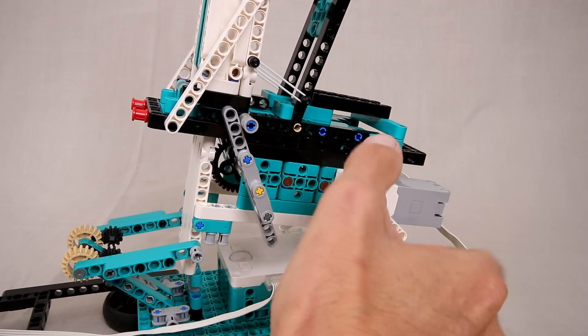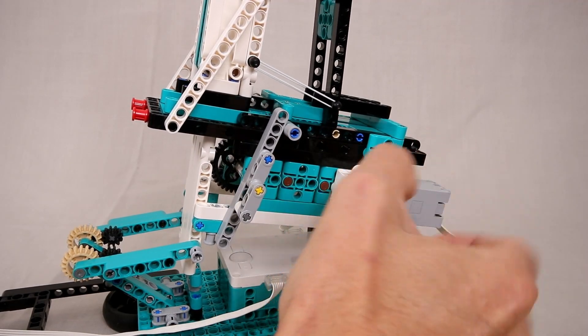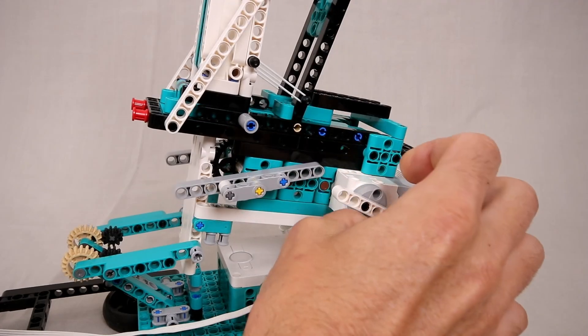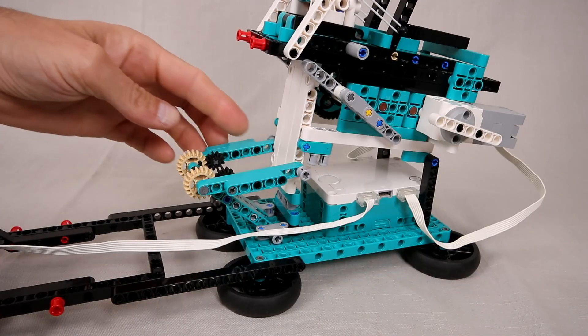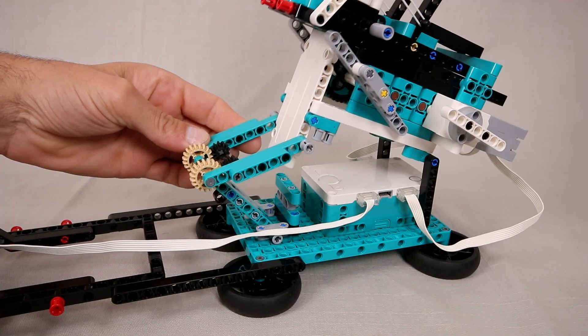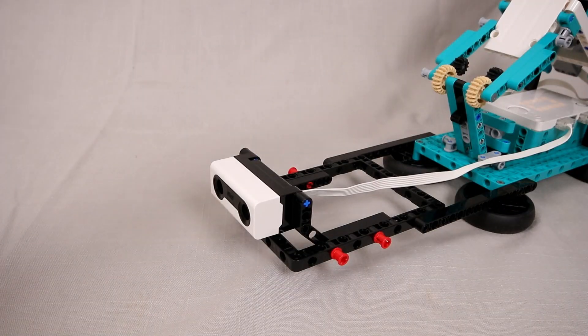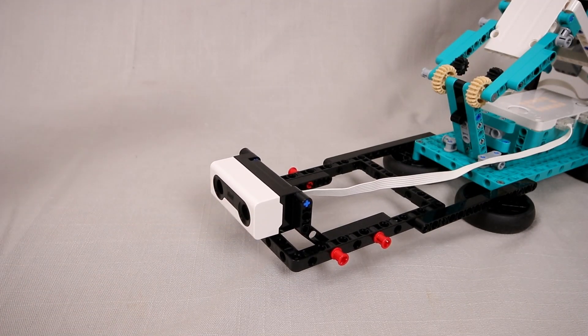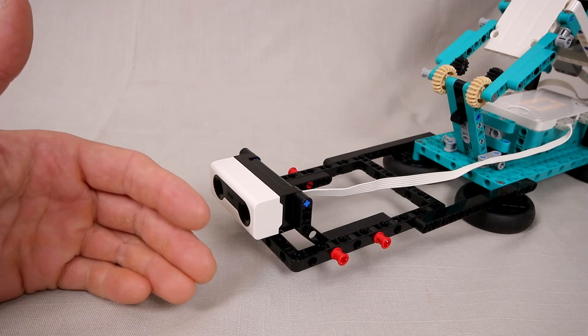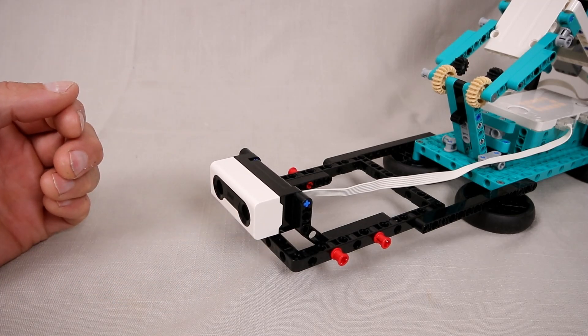I also added a scissor mechanism at the front so I can adjust the launch angle and I also added the proximity sensor in the front of the model so the kids can either put their hand in front of it or hold their bucket in front of it to trigger the launch sequence.